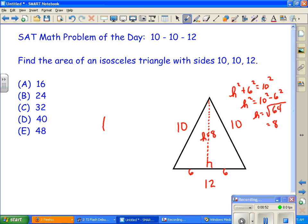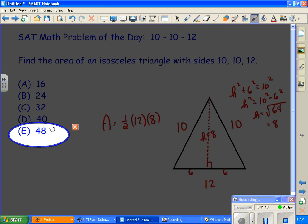And so the area of the triangle is going to be one half of the base. In this case, the base is 12. And the height, the height was 8. So if we take one half of 12, that's 6. 6 times 8 is 48. And that was the correct answer.